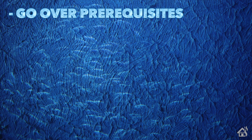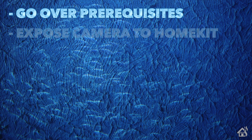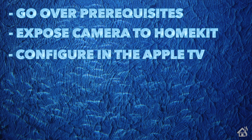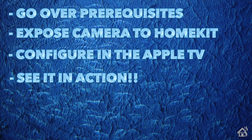So let's do a quick run through of everything we're going to cover in this video. Of course, for starters, we'll go over some prerequisites — things that you need to have already in place in order for this to work properly. Once we do that, we'll expose our cameras from Home Assistant into Apple HomeKit. After that, we'll look at the configuration on the Apple TV, and then lastly we'll see what it looks like in action. Let's get started.